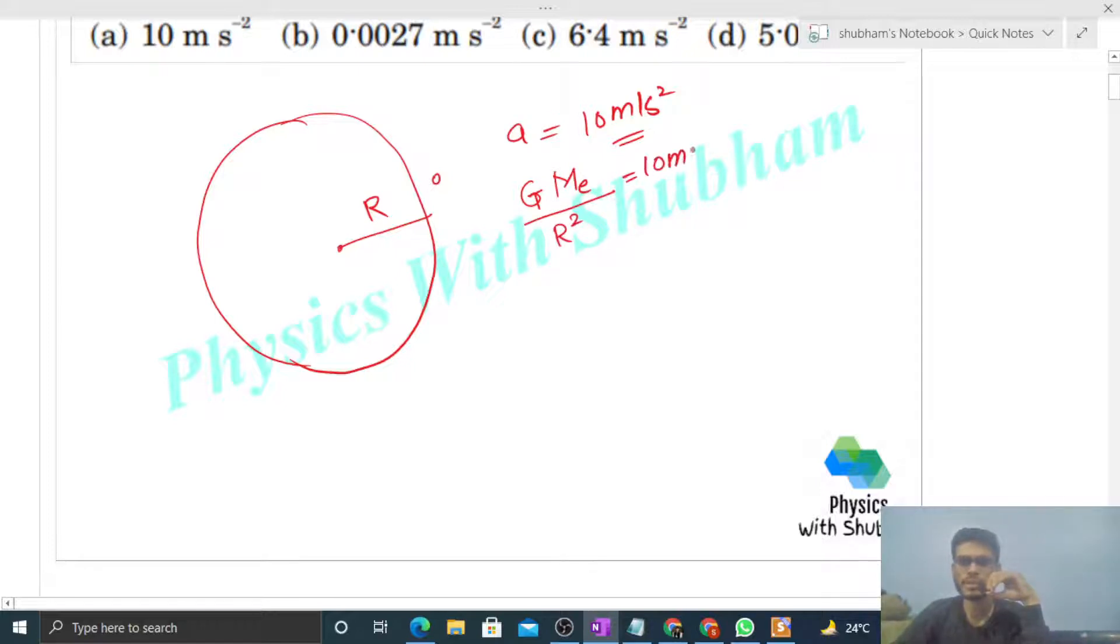Now the moon's radius is 1/4th of the radius of the Earth. It means just before collision it will look something like this. This is your moon, right, and this will be the center of the moon and the radius will be simply R by 4.